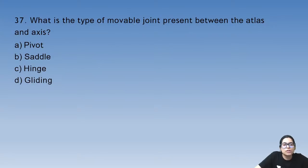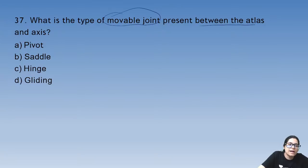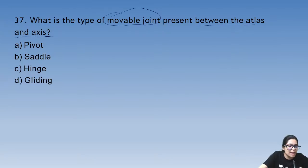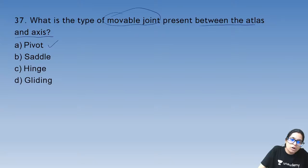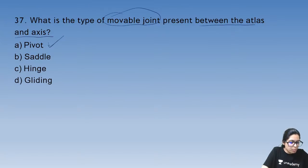Question 37: what type of movable joint is present between the atlas and axis? It is a pivot joint, present between the atlas and axis.